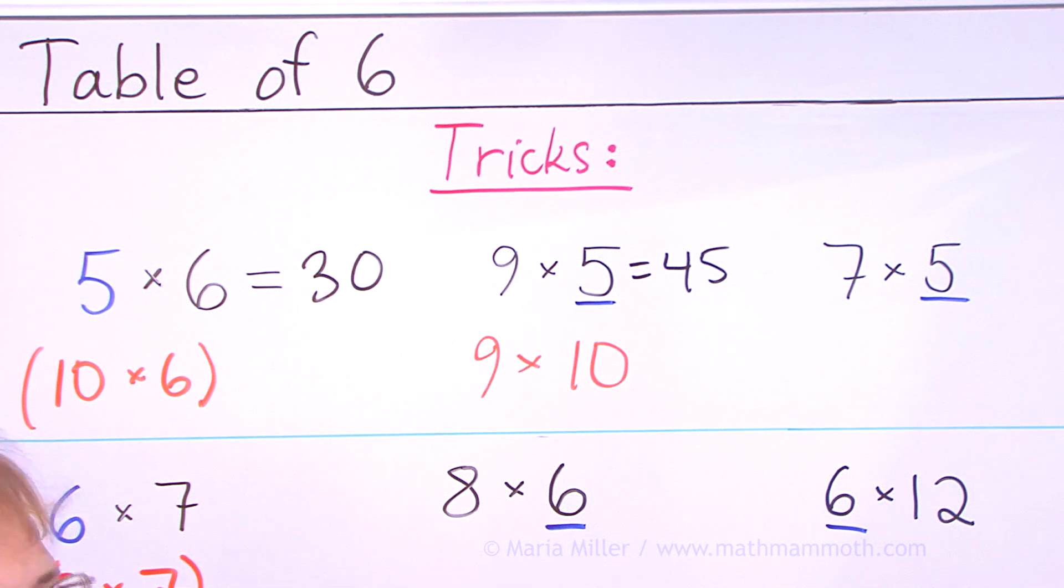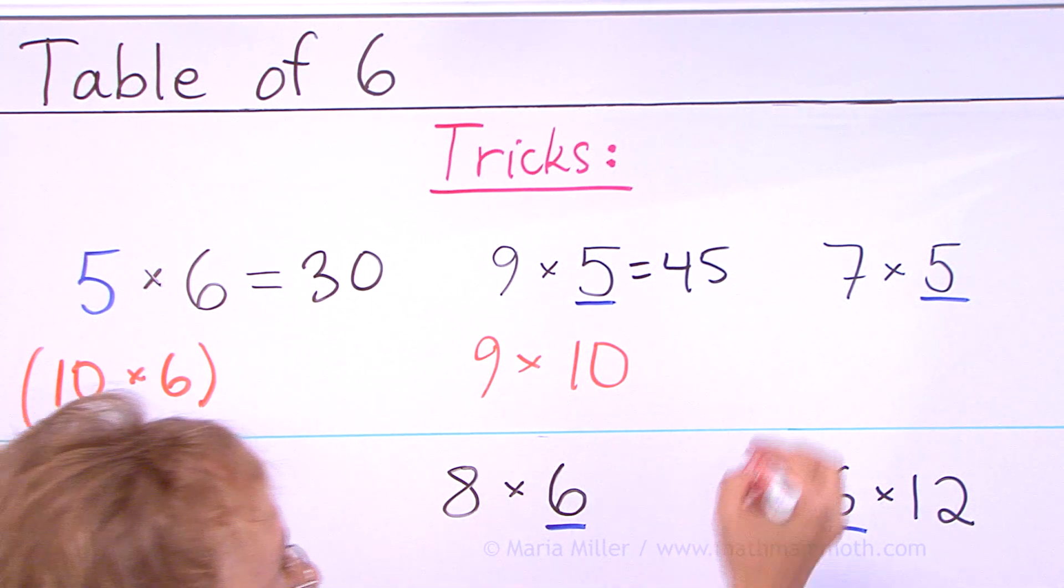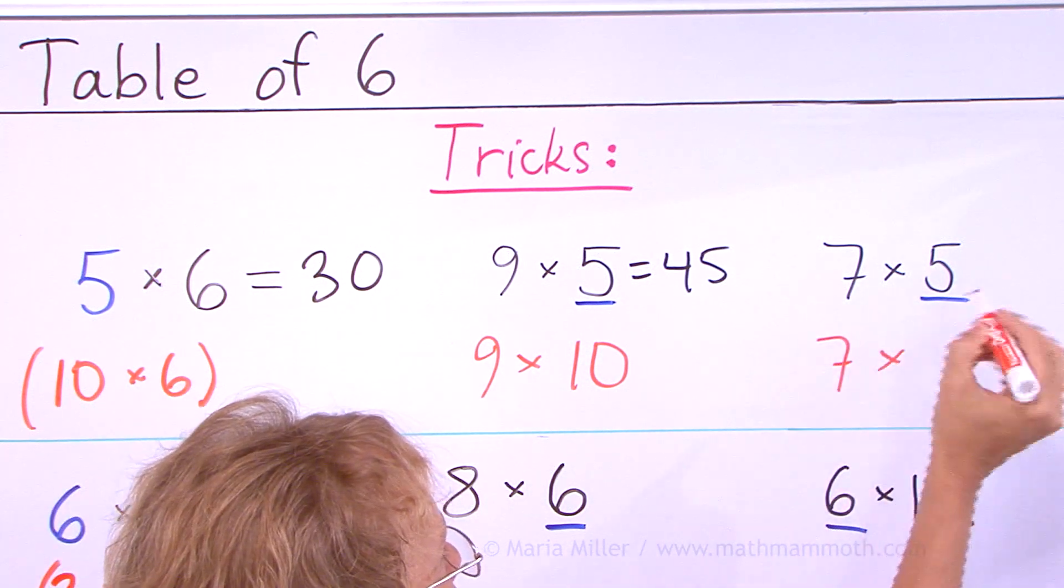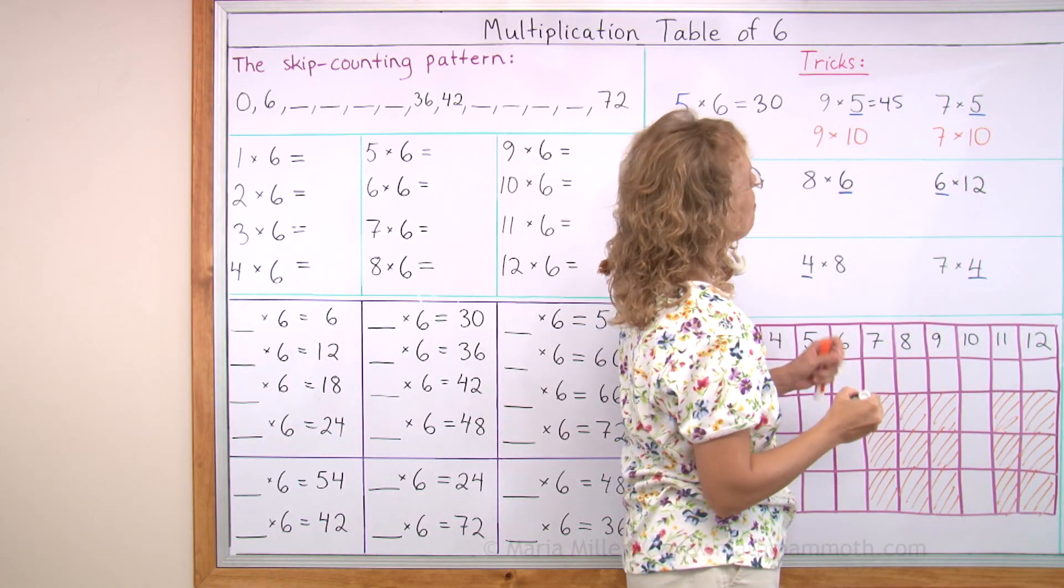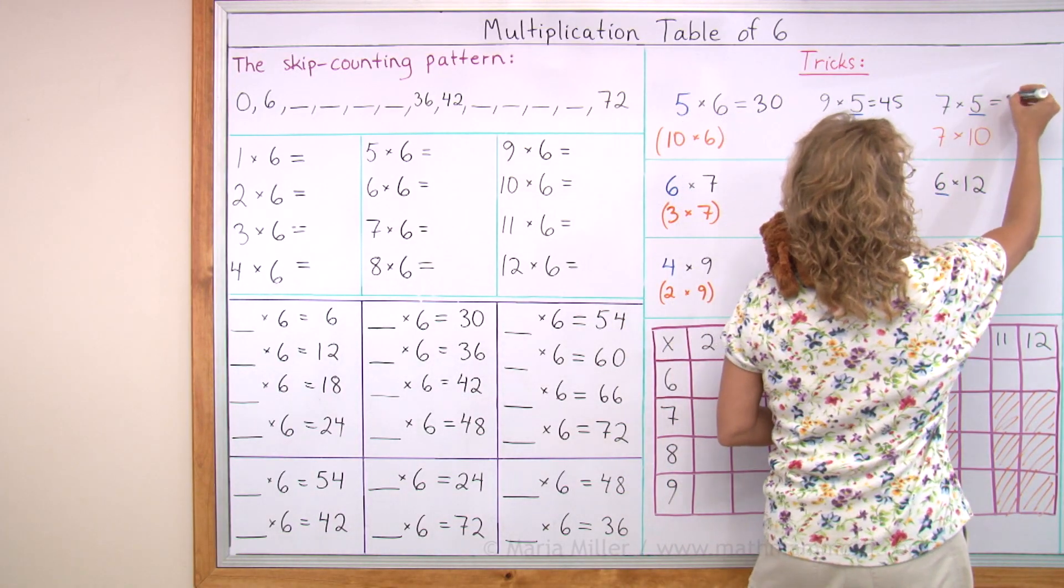7 times 5, what would be the helping problem? You would think of 7 times 10, 70. Take half of that, 35.